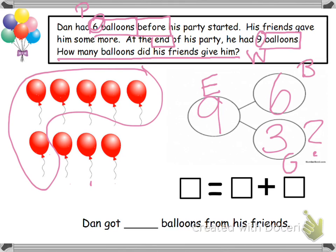Okay, so now our number sentence says blank equals blank plus blank. Now remember when I told you guys about addition number sentences — the parts have to hug that plus sign. So where's the plus sign? Right there. Now put your parts hugging it, and then your whole is by the equal sign. So nine equals six plus three. Or you also could have done nine equals three plus six. So Dan got blank balloons from his friends. Well, we know that three was our mystery — that was what we had to find out. Dan got three balloons from his friends. All right guys, that is it from this video.